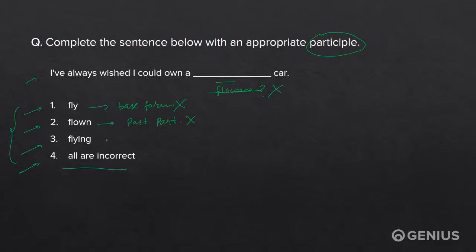Let's try the third option. I've always wished I could own a flying car. This makes complete sense with the present participle flying. So this option is correct.